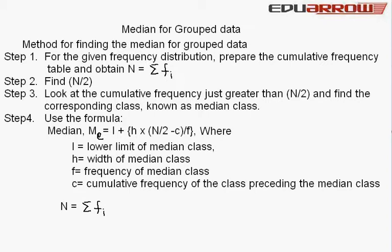First, for the given frequency distribution, prepare the cumulative frequency table. In short, prepare the cumulative frequency (CF) table and obtain N = Σfi, where summation is used for sum of the frequency.